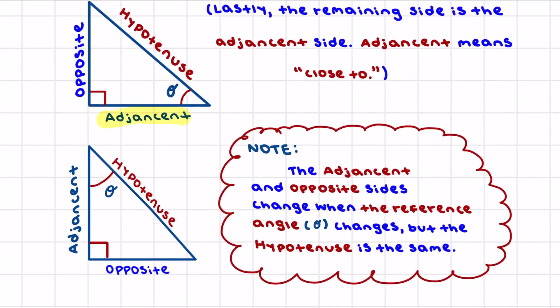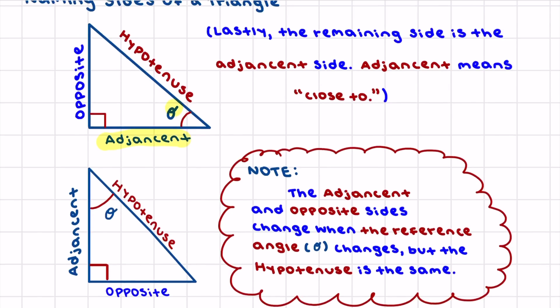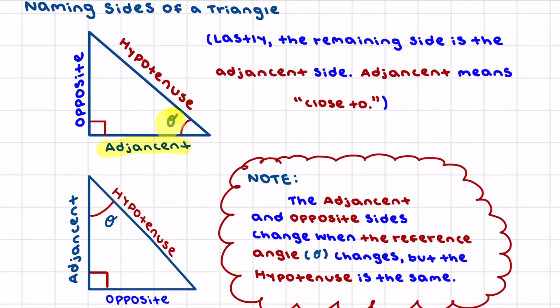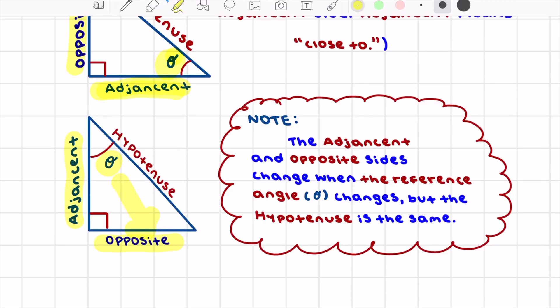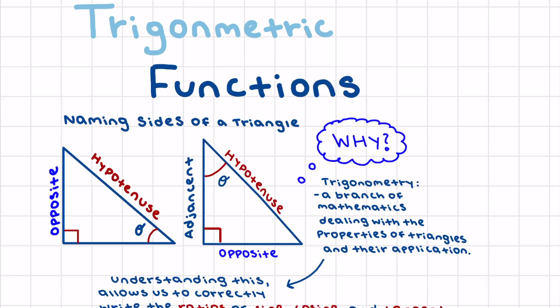One important thing to note is that the opposite side and the adjacent side can change depending on where theta is located. If theta moves, the side it points opposite to becomes the new opposite side, and the side right next to theta becomes the new adjacent side.